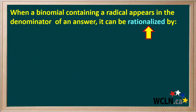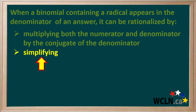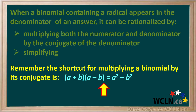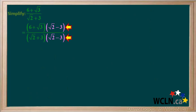Sometimes a binomial containing a radical appears in the denominator. In this case, it can be rationalized by multiplying both the numerator and denominator by the conjugate of the denominator, then simplifying until the expression can no longer be simplified. Recall the shortcut: a plus b times a minus b equals a squared minus b squared. For example, we're asked to simplify 6 plus root 3 over root 2 plus 3. Since there is a radical in the denominator, we rationalize by multiplying both numerator and denominator by the conjugate, which is root 2 minus 3.